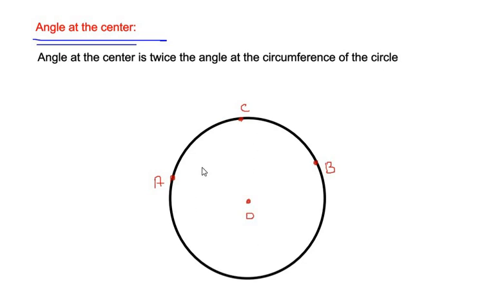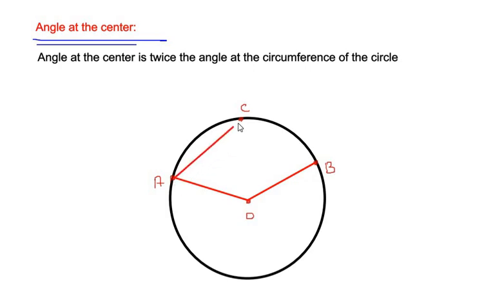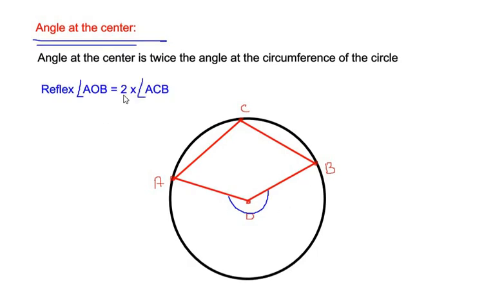I have drawn a circle with three points on the circumference and a center O. Consider that two points A and B make an angle at the center of the circle, that is angle AOB, and the same two points make an angle at the circumference at point C. We will consider the reflex angle AOB as the angle at the center, so the reflex angle AOB equals two times the angle at the circumference, which is angle ACB.